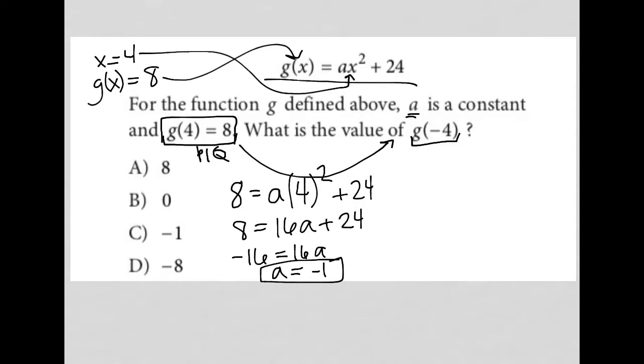Now be careful because that's not what we're looking for, although I do see -1 here as answer choice C. I might be tempted to think that I'm all done here. The question wants me to figure out what's g(-4).